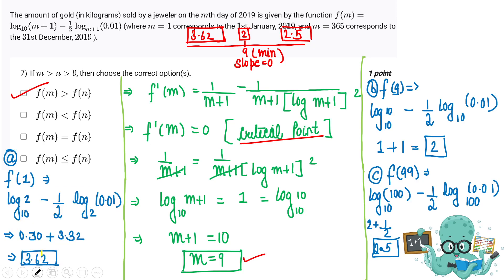Now, unlike a quadratic equation where it's easy to find signs between roots, here I need to evaluate the function around the critical point since the expression involves a log. So I calculate f(9) = 2, then a value smaller than 9, which gives approximately 3.62, and a larger value such as 99, which gives approximately 2.5.